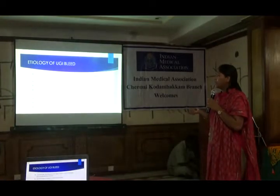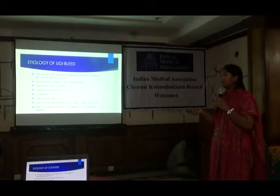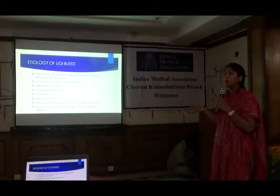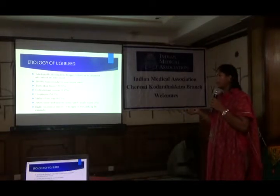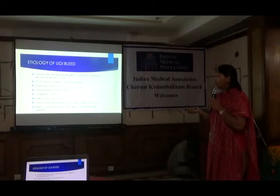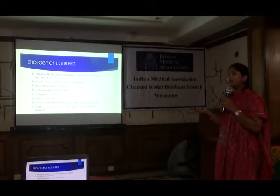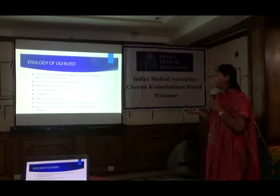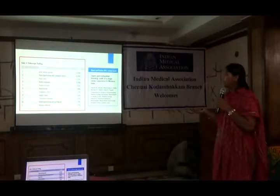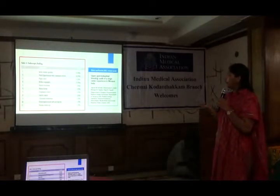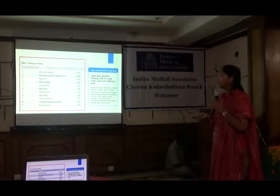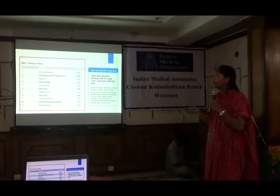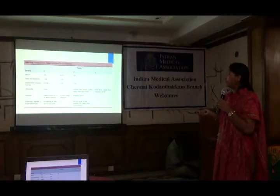Regarding the etiology of upper GI bleed, the most common cause is non-variceal bleed. In our setting, peptic ulcer disease is most common, followed by gastroduodenal erosions, esophagitis, Mallory-Weiss tear, arteriovenous malformations, and gastric antral vascular ectasia. A study in western India among 50 patients found the most common cause was erosive gastritis, followed by portal hypertension with variceal bleed.